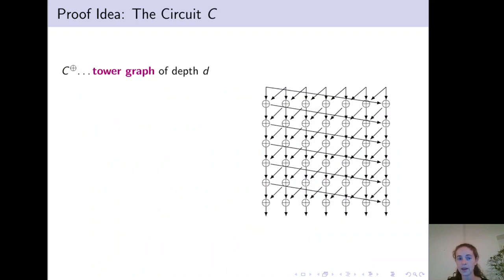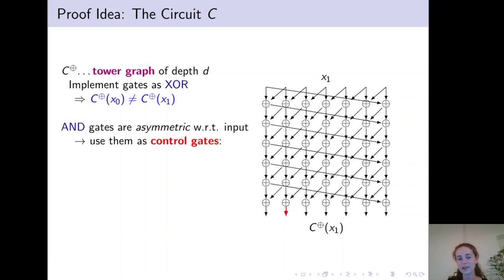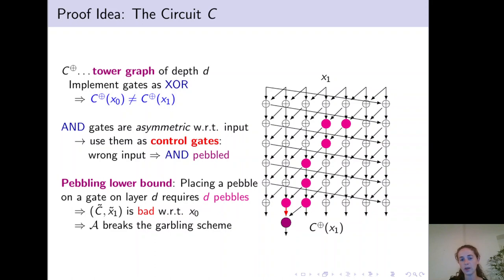In a bit more detail, our circuit looks as follows. It contains a so-called tower graph where all gates are implemented as XOR gates. By some linear algebra results, we can show that for randomly chosen x0 and x1, the output of C XOR will differ. And we then use the fact that AND gates are asymmetric with respect to their inputs. So we can use them as control gates. So if we consider such a different output for x1 compared to the output of C XOR on input x0, if this is an input to an AND gate, then this AND gate will be considered pebbled by the adversary.